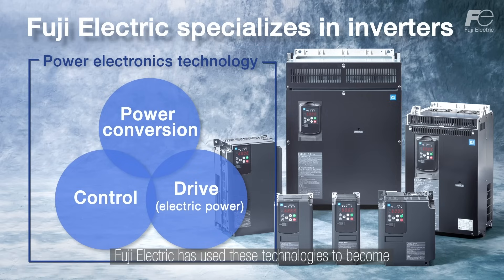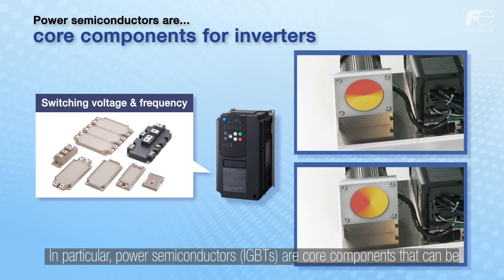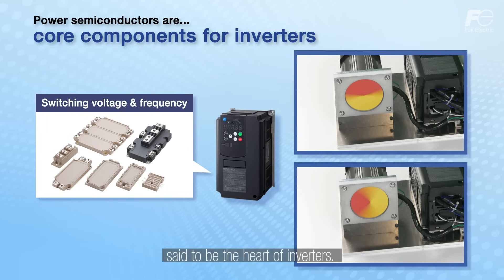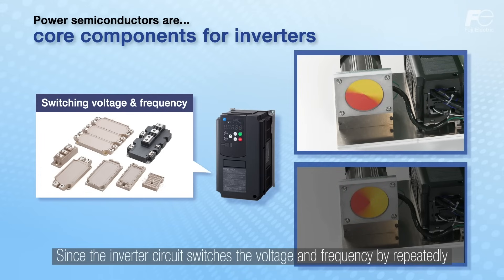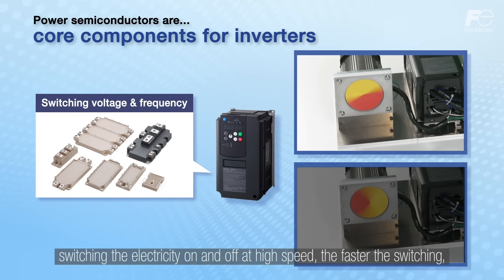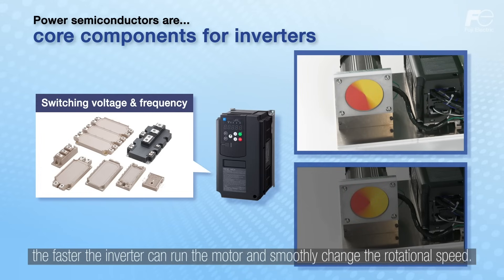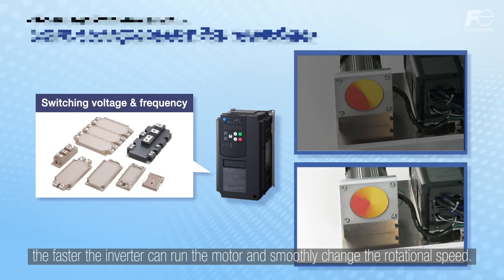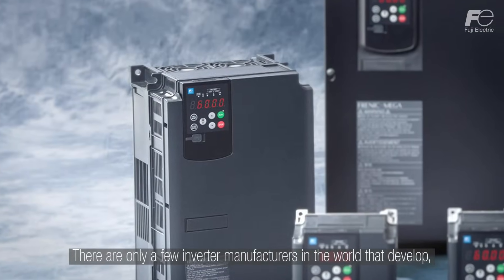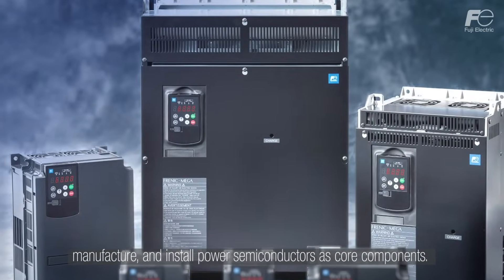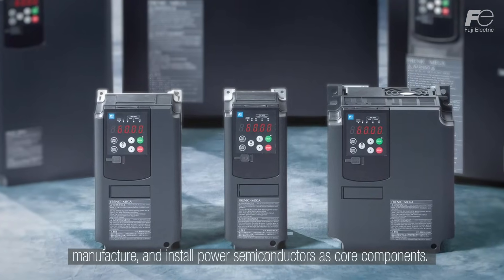In particular, power semiconductors — IGBTs — are core components that can be said to be the heart of inverters. Since the inverter circuit switches the voltage and frequency by repeatedly switching the electricity on and off at high speed, the faster the switching, the faster the inverter can run the motor and smoothly change the rotational speed. Power semiconductors influence the response speed and control accuracy of inverters. There are only a few inverter manufacturers in the world that can develop, manufacture and install power semiconductors as core components.